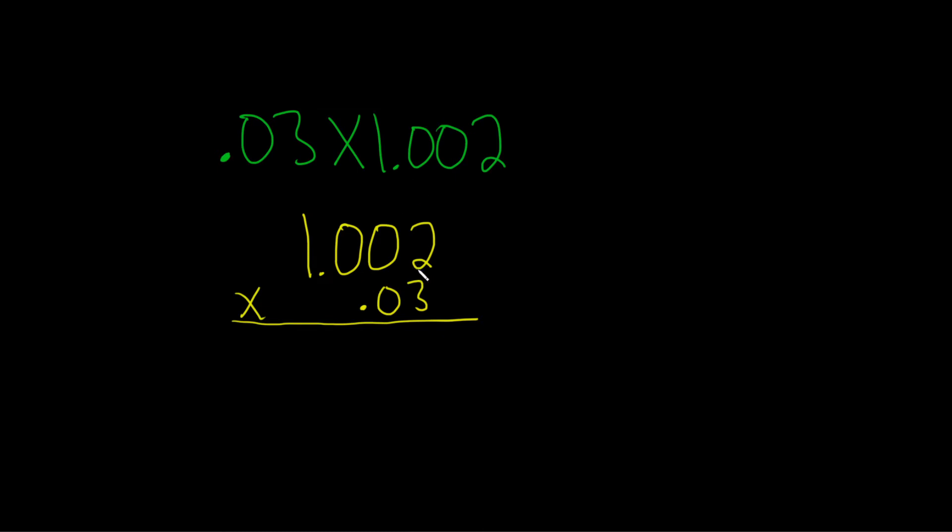The answer in this case is going to have 5 decimal places. How do I know that? Because here there's 2, and here there's 3 decimal places. So if you add them up, we get 5 decimal places.